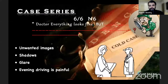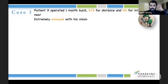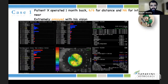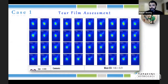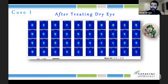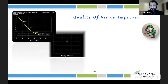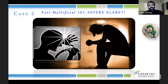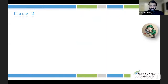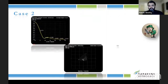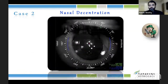Let's go over a series of cases. Here's a 6-6 unhappy patient with a lot of glare and halos. Looking at the scans, there are vibrations arising from the cornea and a lot of scattering occurring. We put the patient on dry eye treatment and the patient healed beautifully — visual quality improved. In the next case, a post-multifocal IOL patient complained of glare and halos. The scans showed poor optical quality and, looking closer, there was a decentration of the lens.